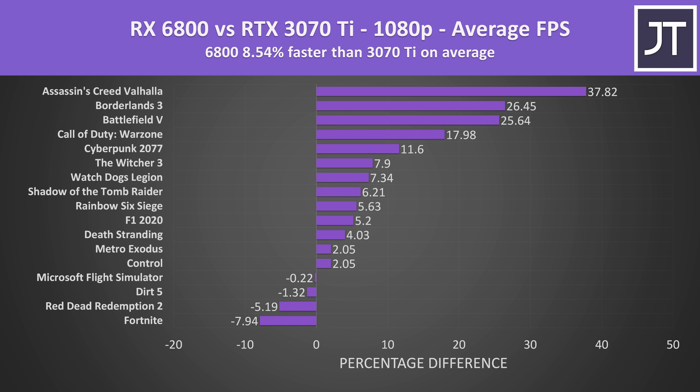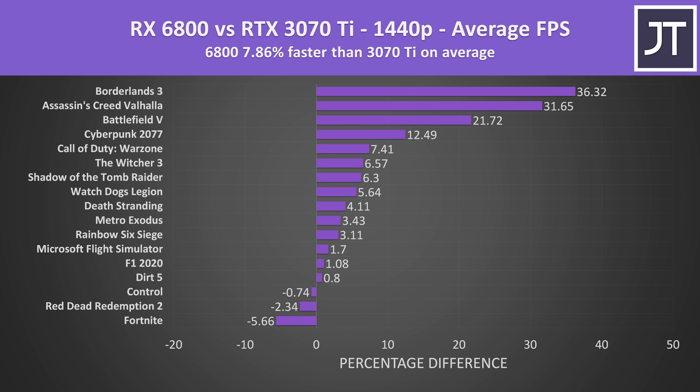On average the RX 6800 is around 8.5% faster in terms of average FPS compared to the 3070 Ti across these 17 games at 1080p. The Nvidia card was faster in just 4 of the 17 titles, while many more had only very minor differences. Stepping up to 1440p, the 6800 is still ahead with less than an 8% lead, though some of its gains are reduced which is why the average difference drops back a little.